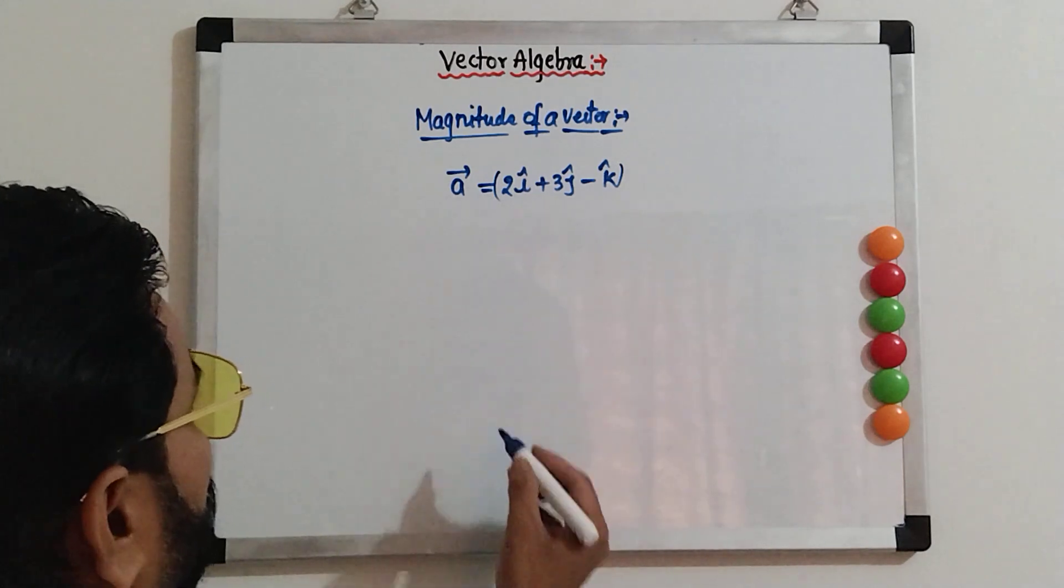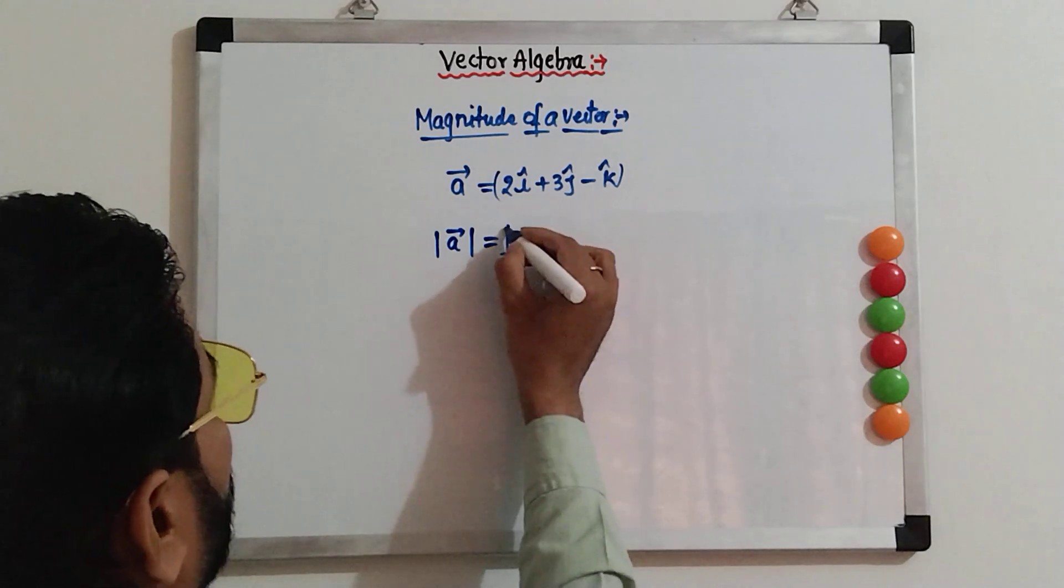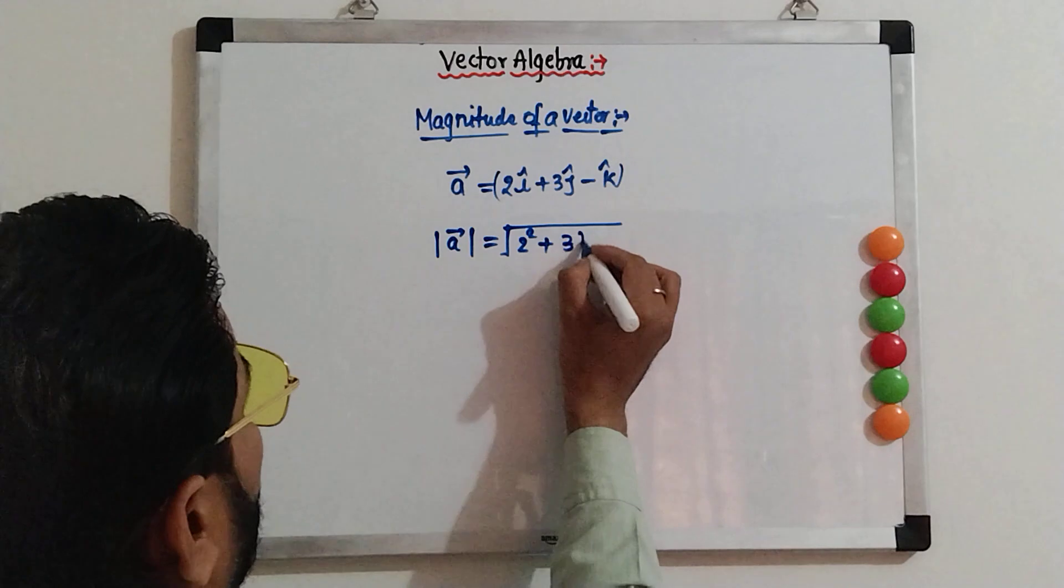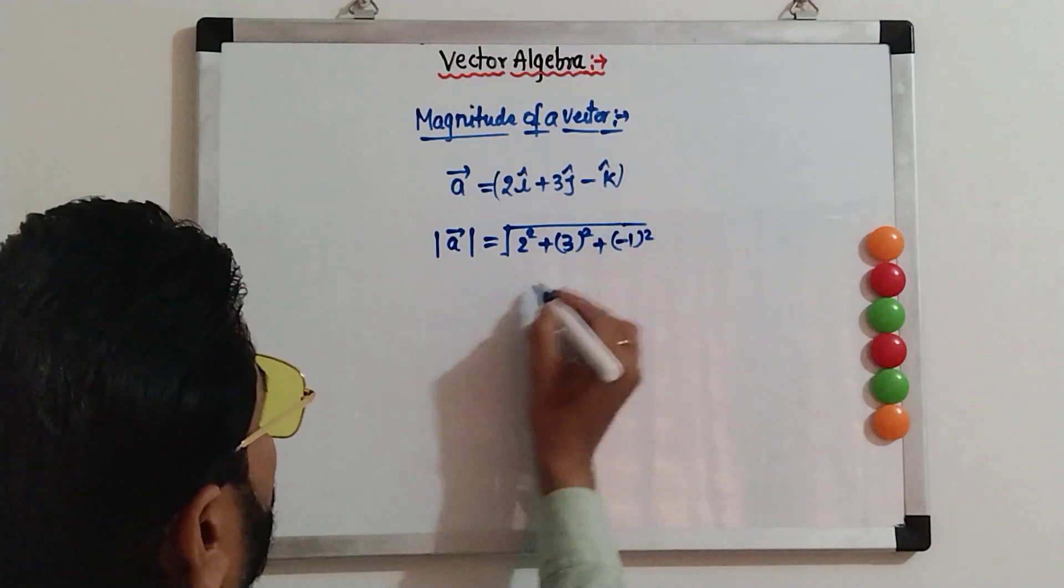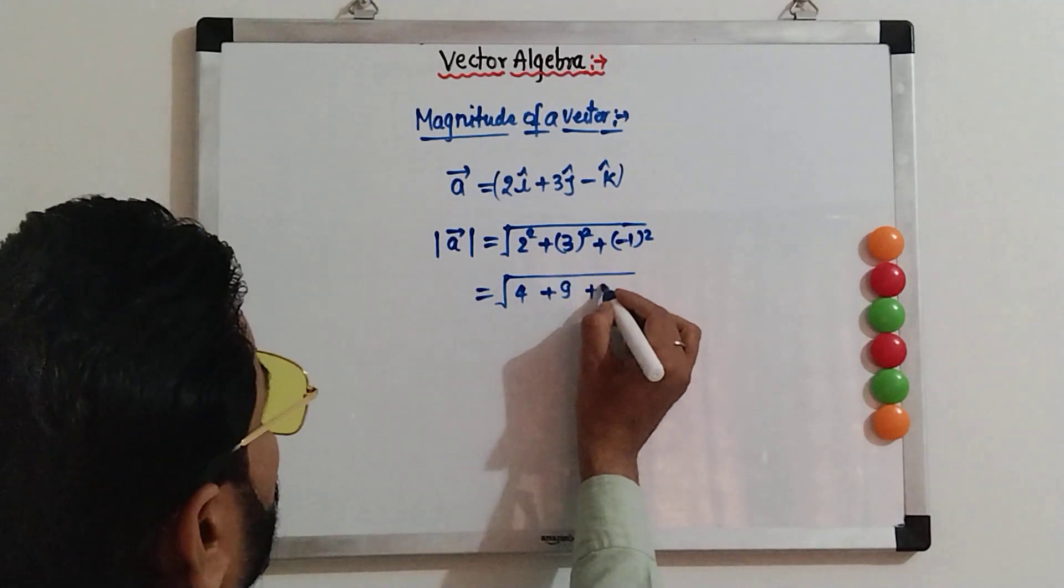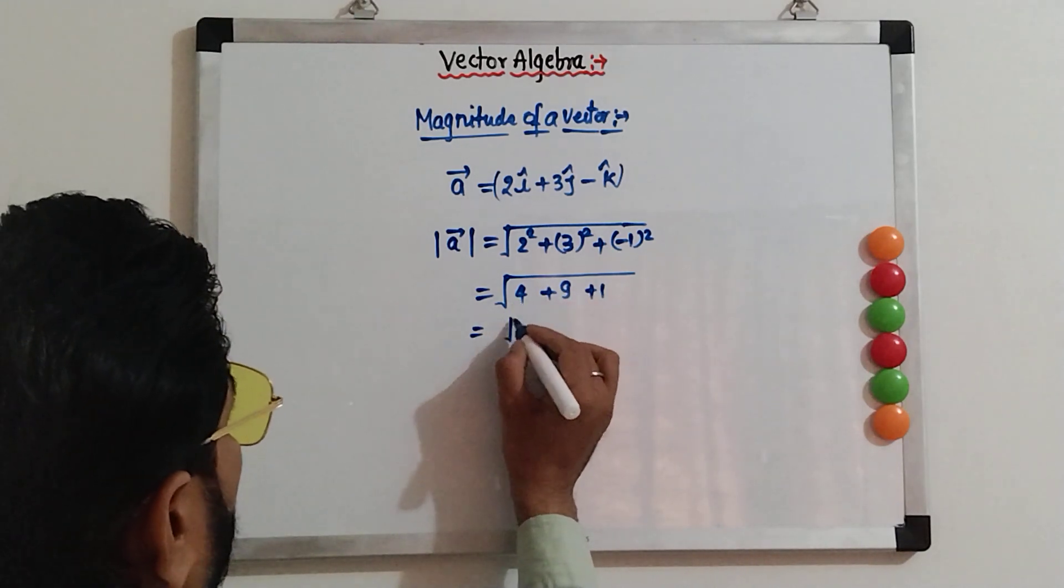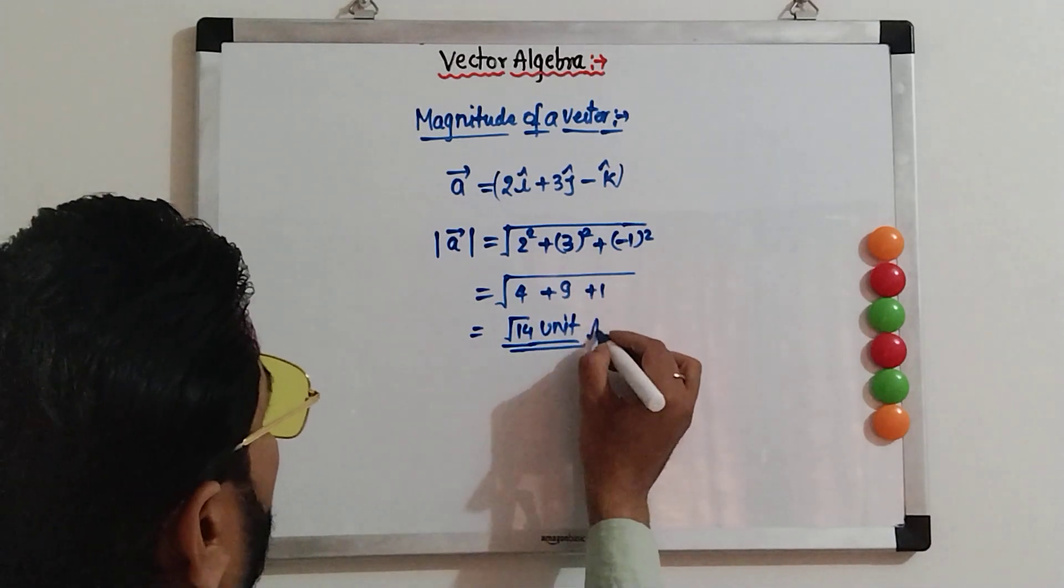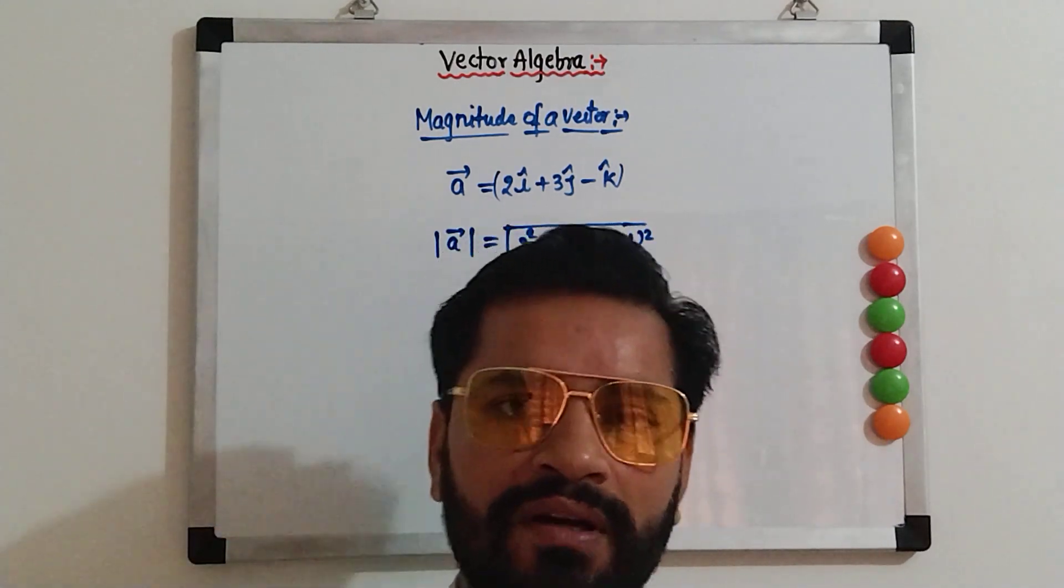So, this is our vector. This is the magnitude of a vector. Okay? This is the magnitude of a vector.